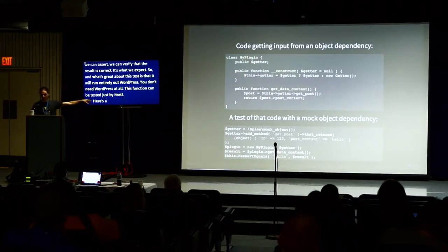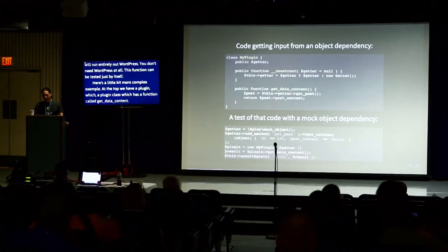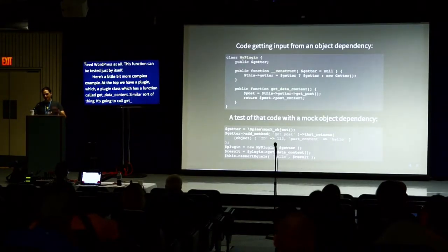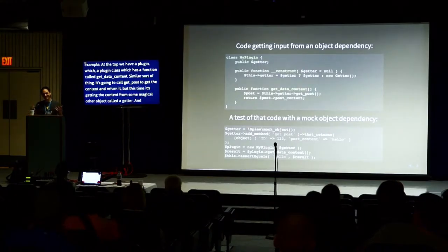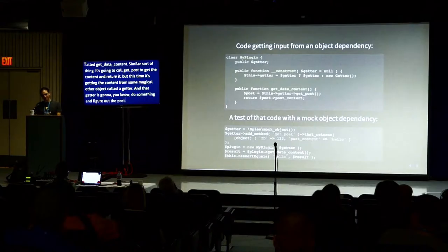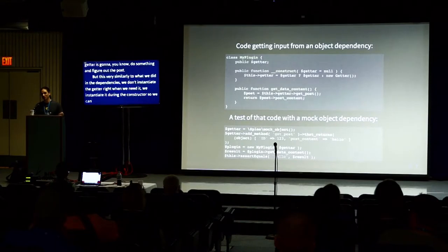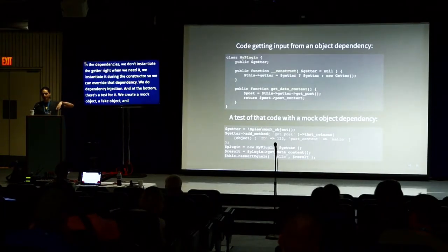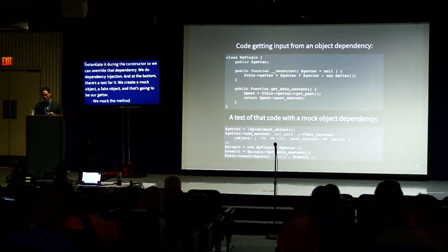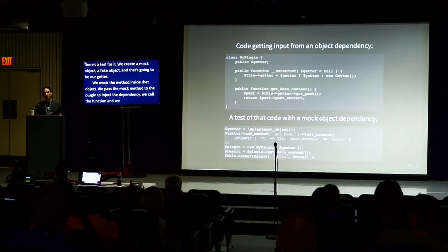Here's a more complex example. At the top, a plugin class has a function called getDataContent — it calls getPost to get the content from a magical object called the getter. We don't instantiate the getter when we need it; we instantiate it during the constructor so we can override that dependency — dependency injection. At the bottom, there's a test: we create a mock object as our getter, mock the method inside it, pass the mock to the plugin, inject the dependency, call the function, and verify the result. Again, all without WordPress.